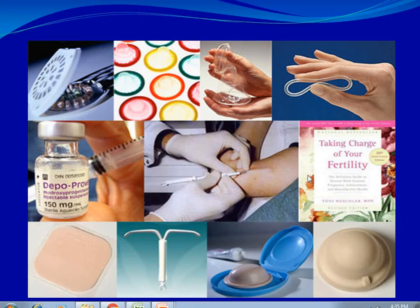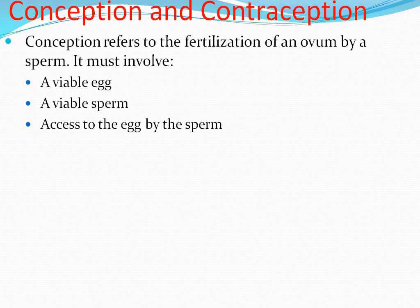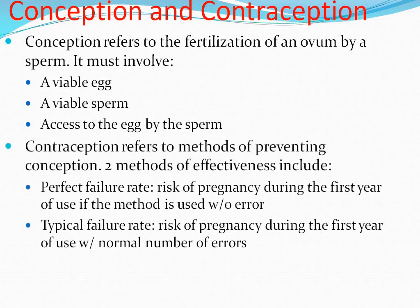Today's topic is contraception. Before going to contraception, let us learn about what is conception. Conception refers to the fertilization of an ovum by a sperm. It must involve a viable egg, a viable sperm, and access to the egg by the sperm. Contraception refers to methods of preventing conception.